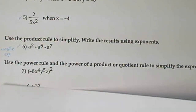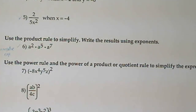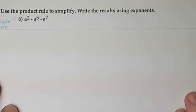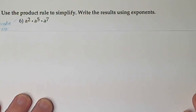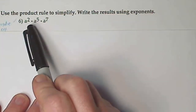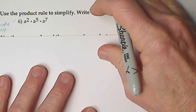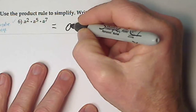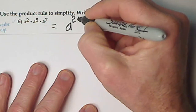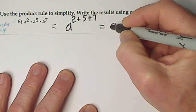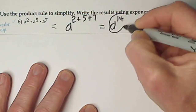Number 6 — here they want us to use the product rule. All the exponents are positive. In general, I encourage you to get your exponents all positive before you work with them. And remember, when you multiply, you add exponents. So what you have here is equal to a to the 2 plus 5 plus 7, which is simply a to the 14th. And that is your answer.